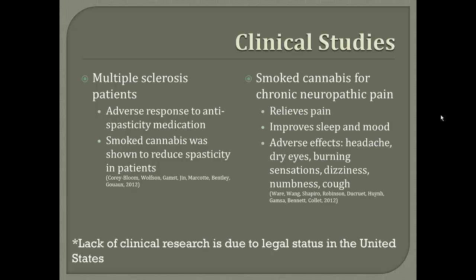There hasn't been a lot of clinical research done on Cannabis sativa due to its legal status as a Schedule I drug. But in one study done on multiple sclerosis patients who responded badly to anti-spasticity medication, smoked cannabis was shown to reduce that spasticity. And in another study, when Cannabis sativa was given to patients who had chronic neuropathic pain with not many treatments available, the cannabis was shown to relieve their pain and improve sleep and mood.